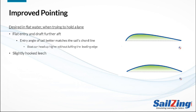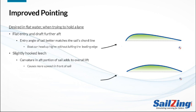Next, you want a slightly hooked leech. Many top sailors will tell you that the leech helps you point — here's why. Hooking the leech adds curvature to the sail, which increases the overall lift. The extra lift affects a phenomenon called upwash — the deflection of the air in front of the sail. Upwash creates a slight shift in the apparent wind angle ahead of the sail, which increases the angle of tack and lets you head up a bit.